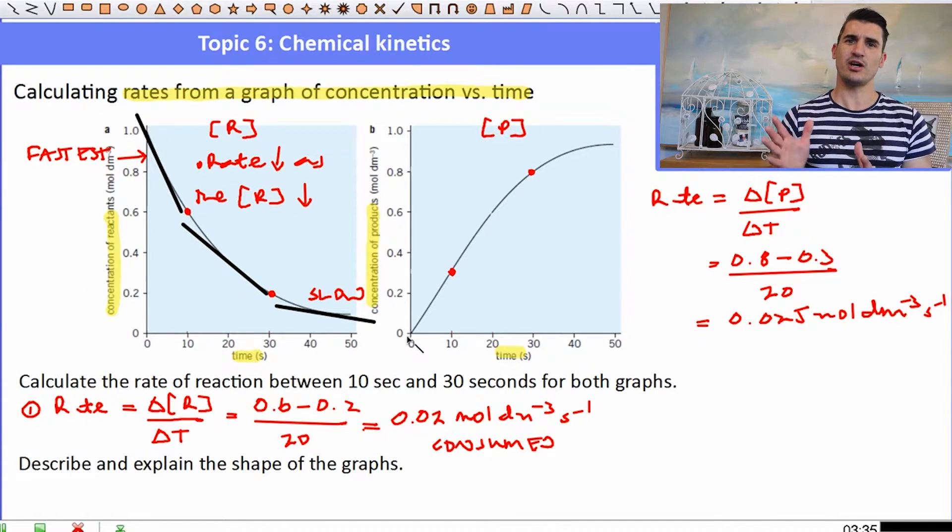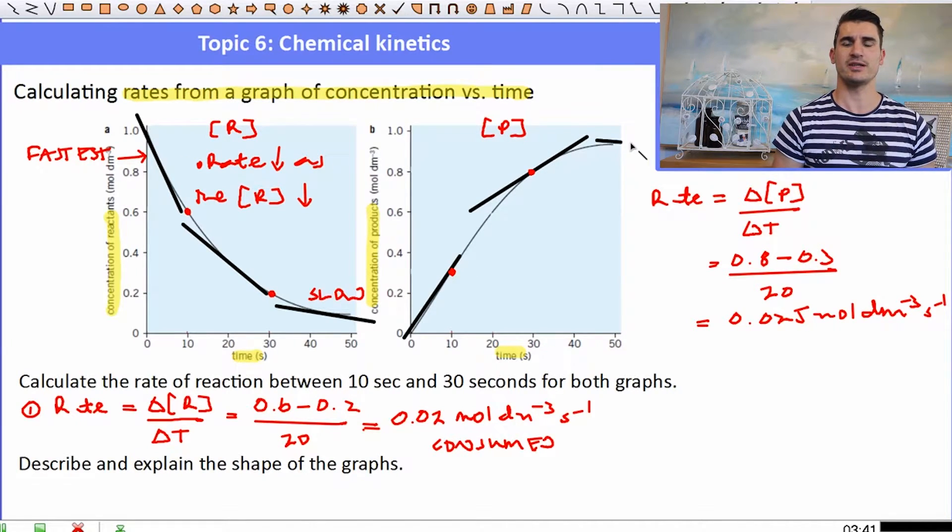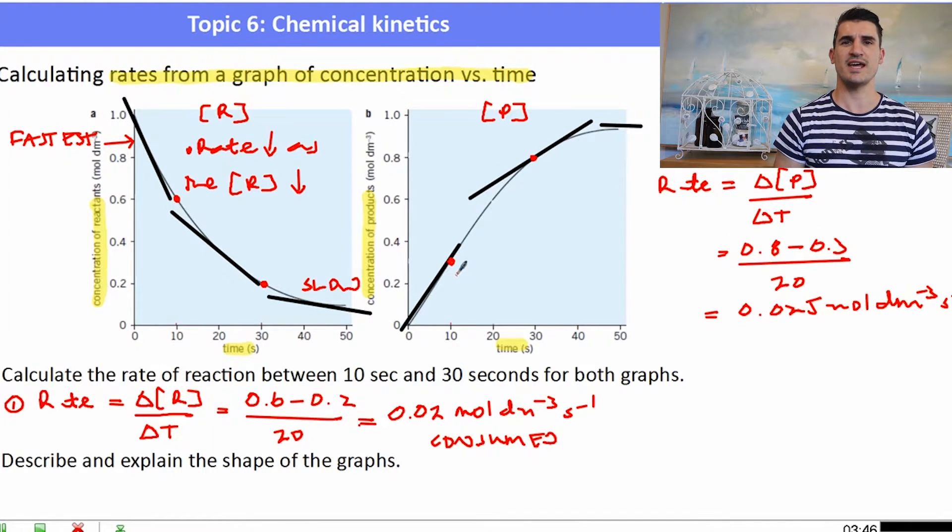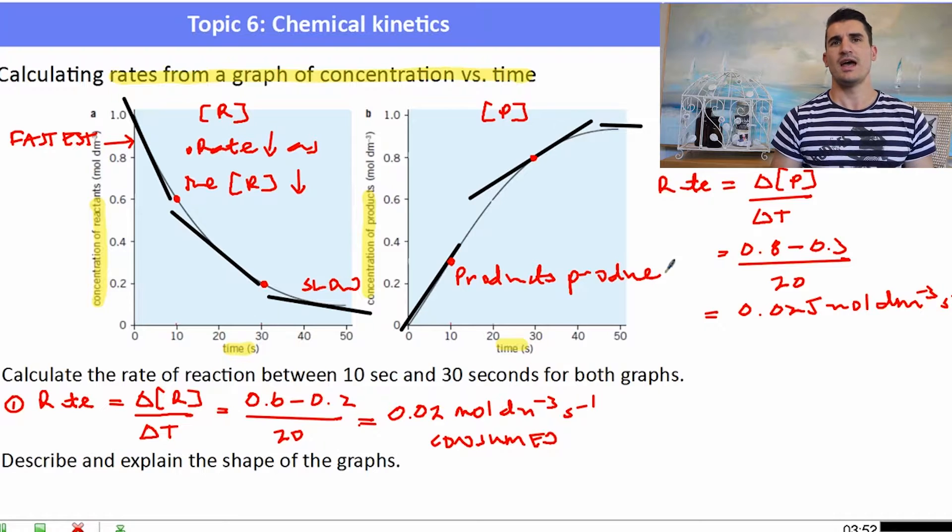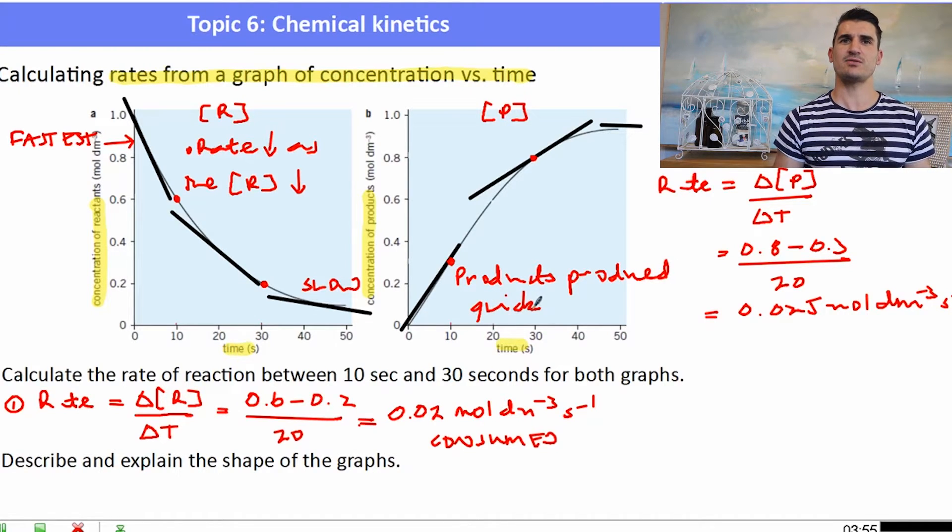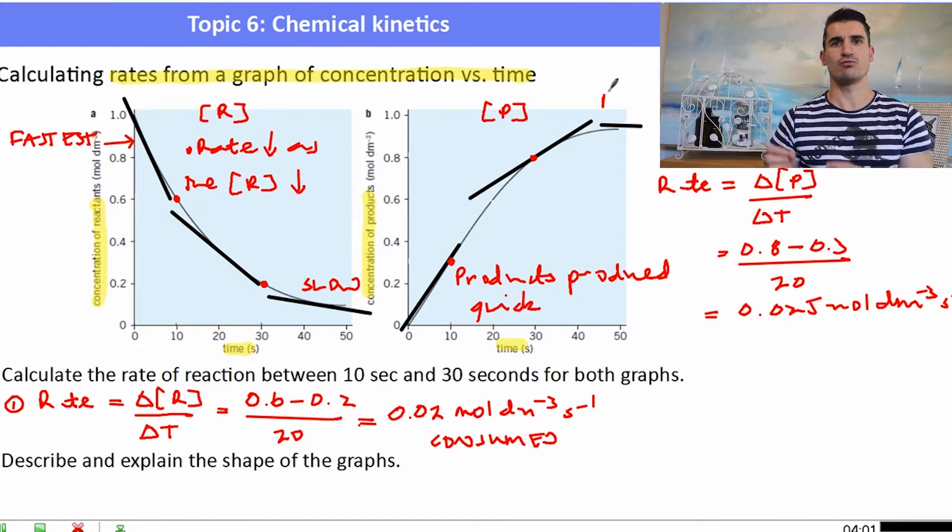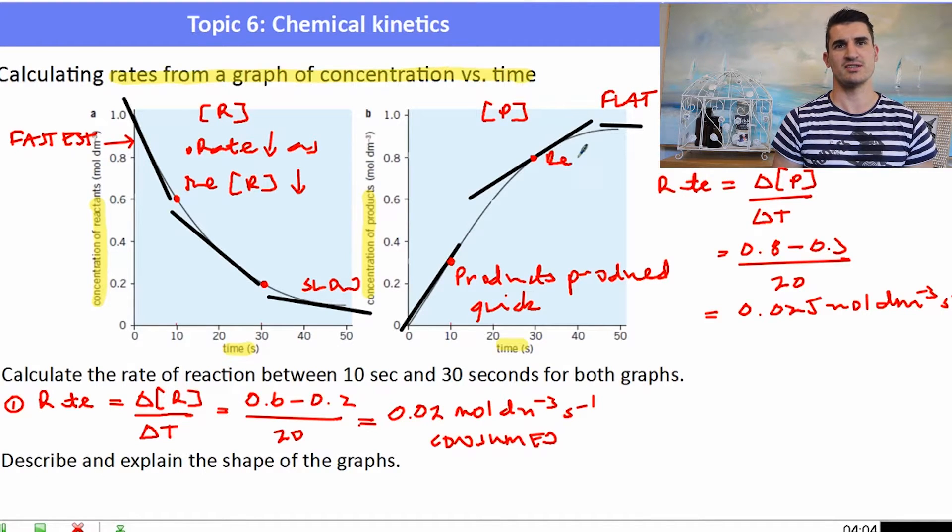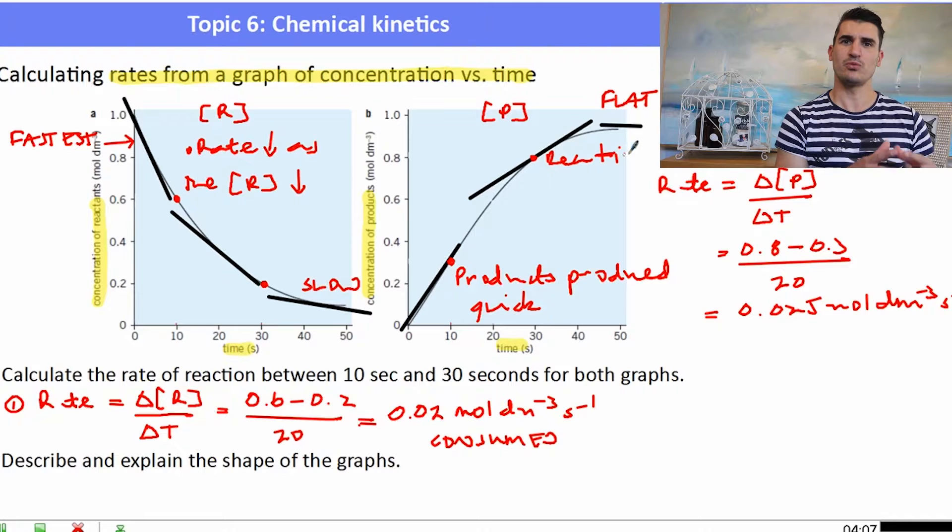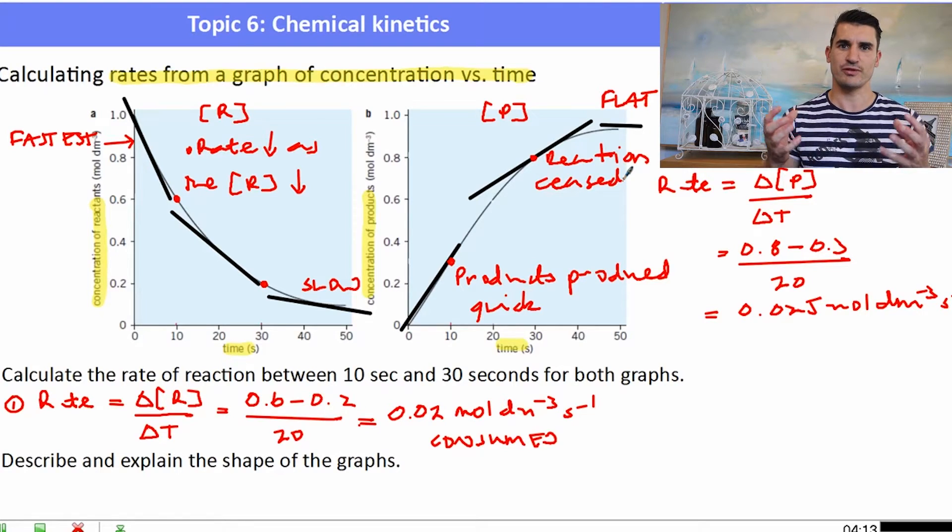The products graph, we can see the same kind of thing, but just in reverse. Because we started off with no products, then the products are formed very quickly. As we go further along the graph, you can see that the production of products slows down, because the amount of reactants that are available to react is getting smaller. Eventually, the graph will completely flatten out, and that's when we know that the reaction has stopped. So as the reactants start to decrease, the rate of the formation of the products also starts to decrease. So in both cases, the rate was fastest at the start. Either the rate of the products forming, or the rate of the reactants reacting, that is the fastest at the start.